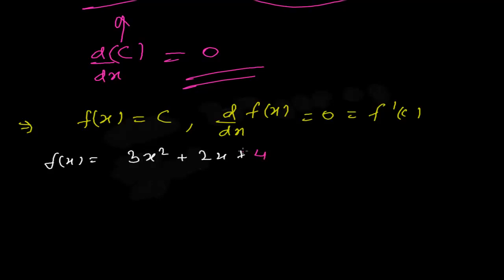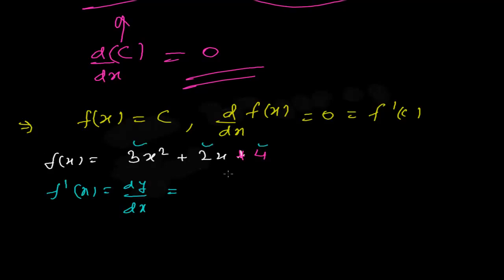Suppose f(x) = 3x² + 2x + 4. I'm writing the 4 in a different color because it is the constant term. If we want to find the derivative of this function, dy/dx or f'(x), we apply the algebraic rules we've learned — the derivative of each term separately gives us the full derivative.